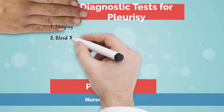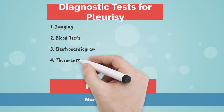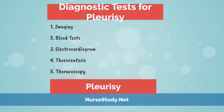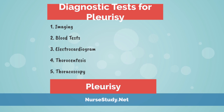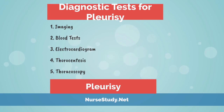Diagnostic tests for pleurisy. 1. Imaging: chest x-ray, CT scan, or ultrasound. 2. Blood tests to determine any bacterial, viral, or fungal pathogens, or any autoimmune disease. 3. Electrocardiogram (ECG) to check if the chest pain is heart-related.